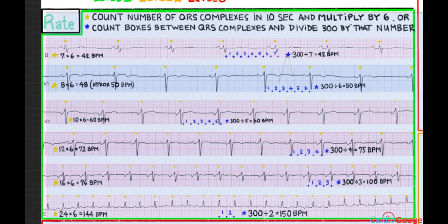Let's start with the rate — the easiest thing. You can calculate the rate by counting the number of QRS complexes in 10 seconds and then multiplying by six. A standard ECG is 10 seconds. Counting here: one, two, three, four, five, six, seven. Seven times six is 42 beats per minute. So you can do the rate that way.